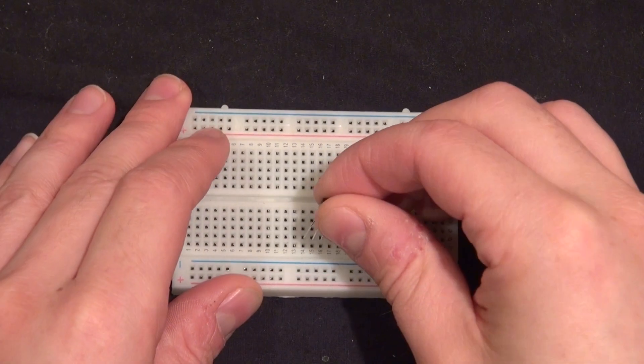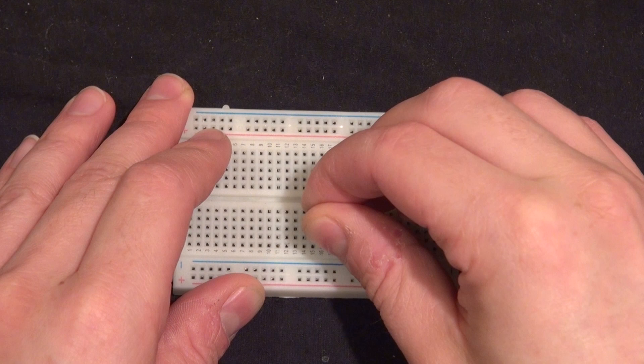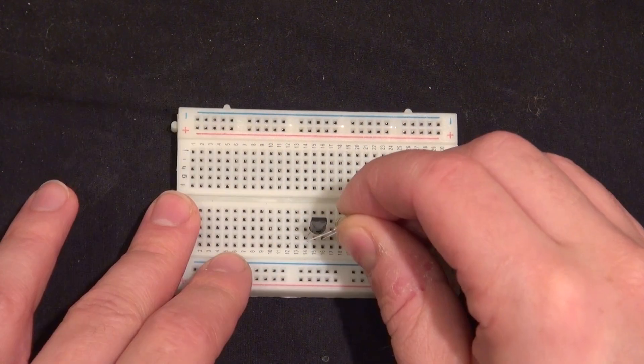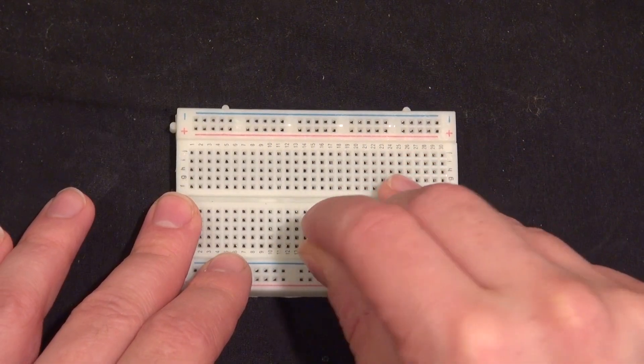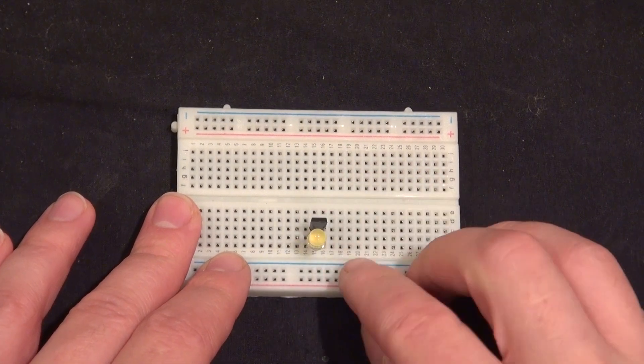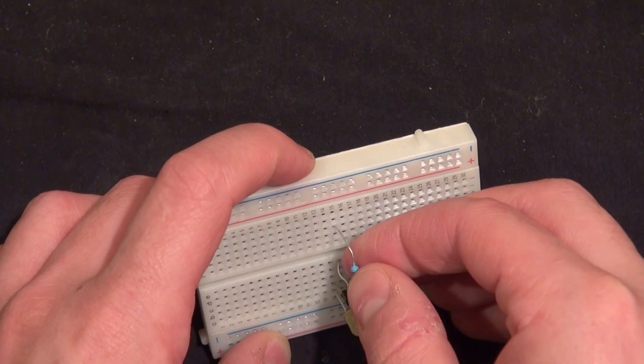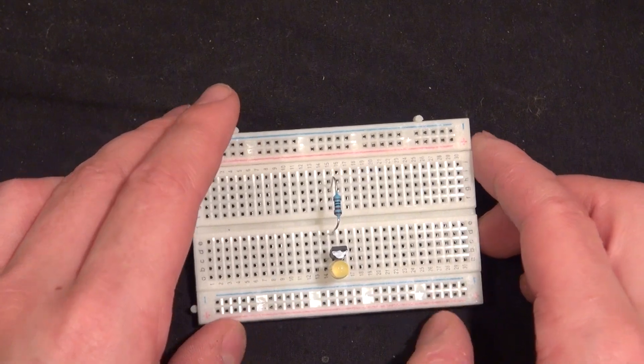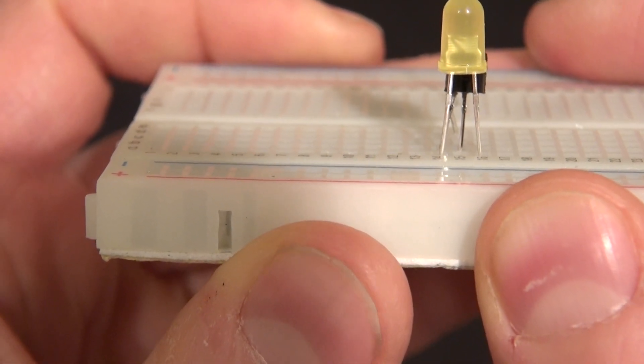Okay so now I'm going to start building this circuit. I'm going to place my transistor and my LED and my 1k ohm resistor and it should look just like that.